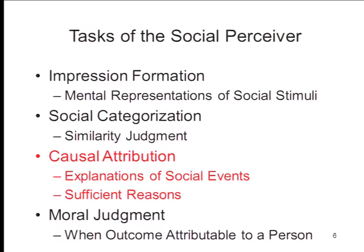The third task — and the topic for this series of lectures — is what's known as causal attribution: the process by which we try to explain what's going on in the world around us. We do this in the non-social world as well as the social world. The fourth task, which flows from this, is moral judgment, which just doesn't apply in the non-social world. We don't make moral judgments about trees falling or tigers killing gazelles, but we do make moral judgments about other people when we attribute social events to a person rather than a situation.